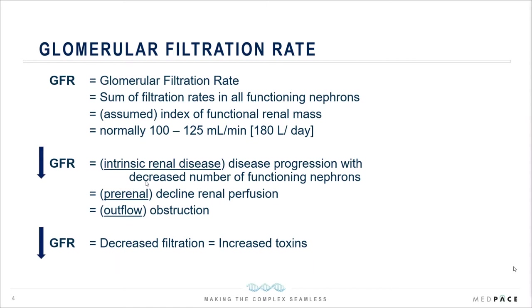When GFR declines, as a nephrologist we look at where the disease process is taking place. We break it down into three major areas. Intrinsic renal disease means a decreased number of functioning nephrons — an issue with the parenchyma. Pre-renal involves a decline in renal perfusion, as in hypotensive or septic shock patients. And if there is an obstruction, we call that an outflow issue, such as kidney stones or cancers blocking urine flow. When there's a decline in GFR, patients are susceptible to increased toxins. Those with a chronic decline in GFR have CKD.